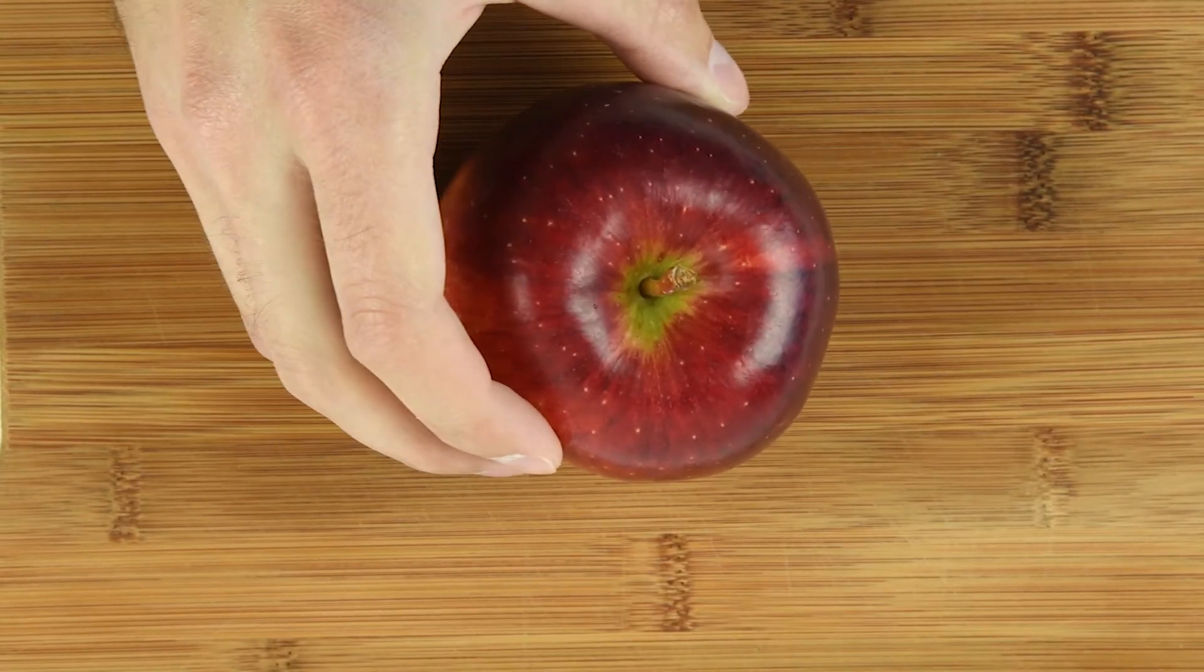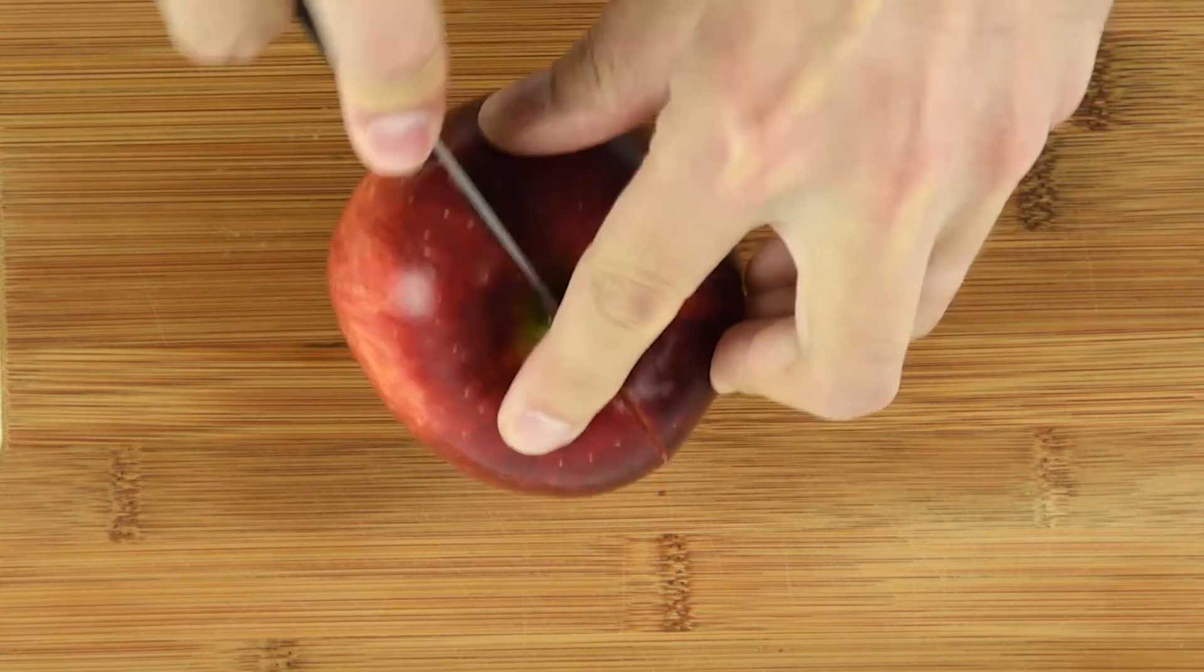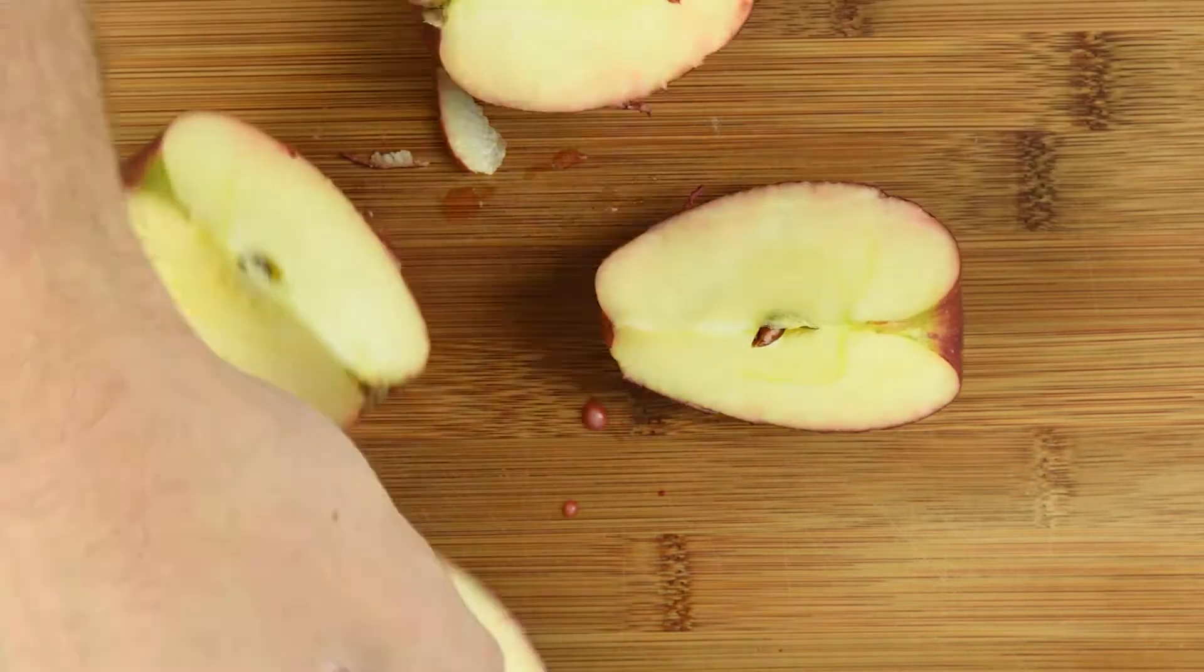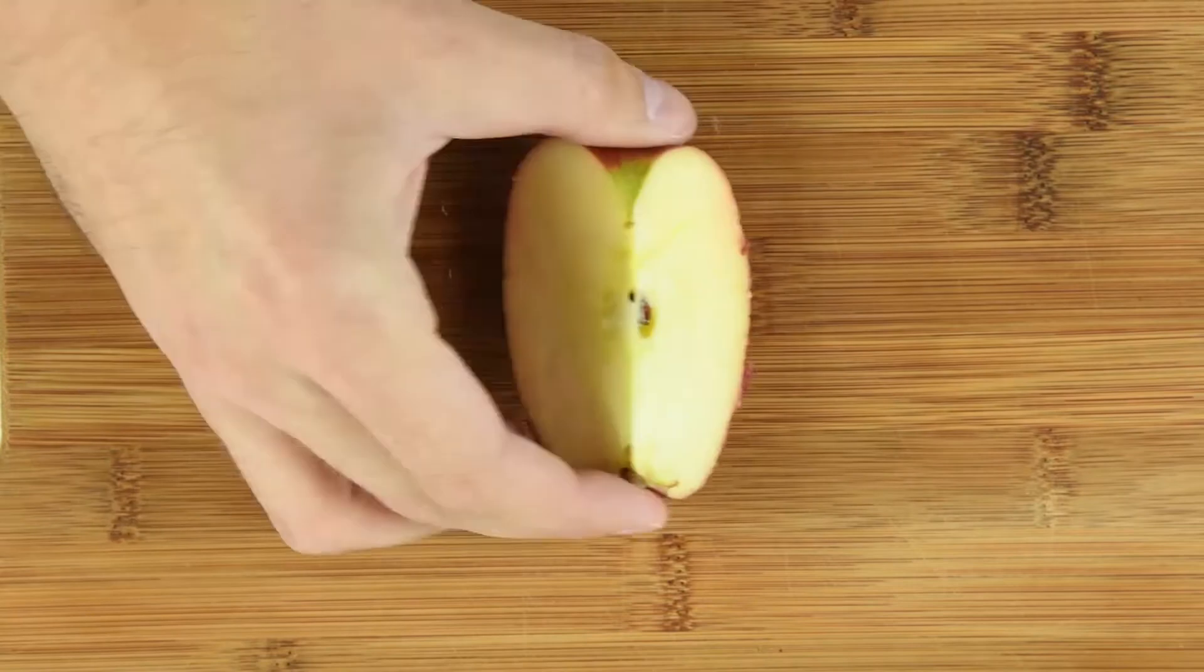If we think of this apple as representing the earth and cut the apple into quarters, three of the quarters represents the oceans of the world.